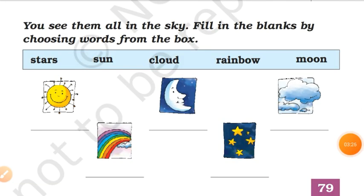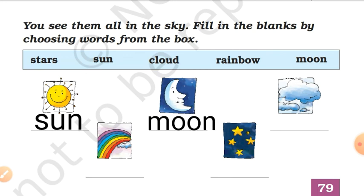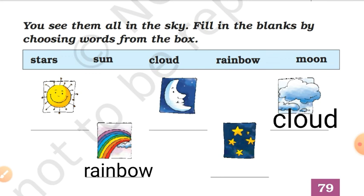Next, what is it? You see them all in the sky. Fill in the blanks by choosing words from the box. In the box there are words and pictures. You have to choose from here. Sun. Next, moon. And this is cloud. Next, rainbow. And what is it? Stars. Okay, yes.